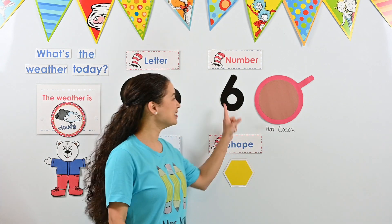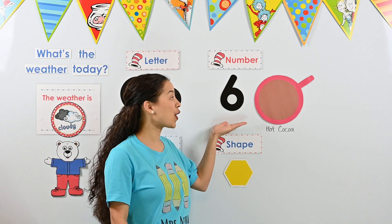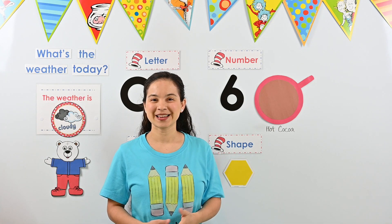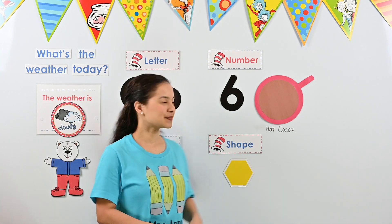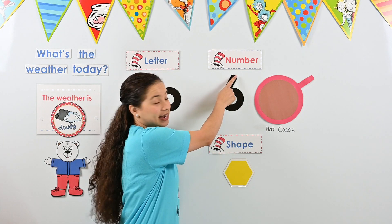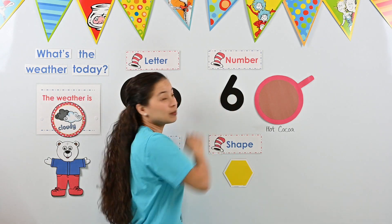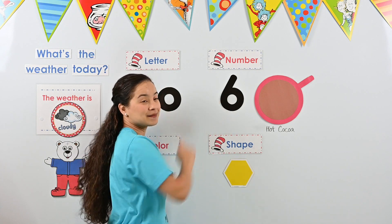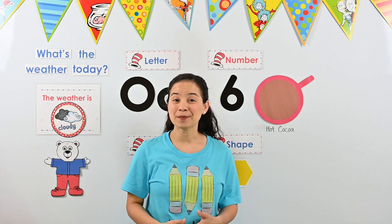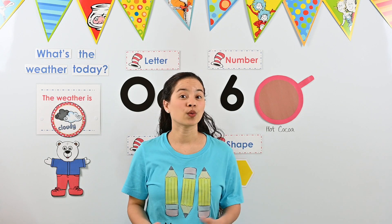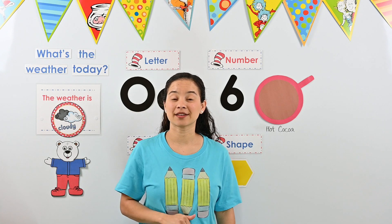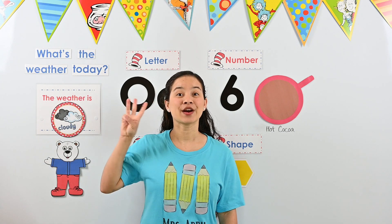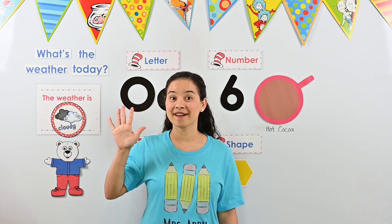Let's move on to our number of the week. This week, we are learning about the number six. Can you say six? Let's look at the number six. The number six has a slanted line at the top, and it curves down and then makes a loop — so it almost looks like our letter O at the bottom. That's what the number six looks like. Can you help me count to six? When you hear six, you have to stop counting. Let's count: one, two, three, four, five, six.